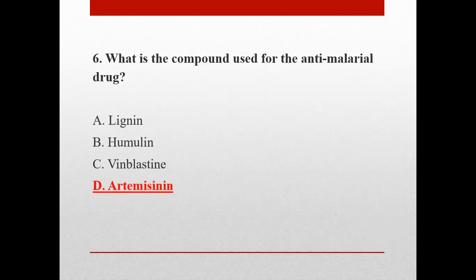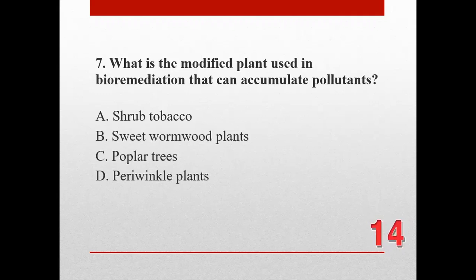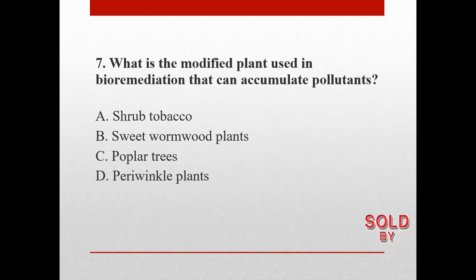Number seven. What is the modified plant used in bioremediation that can accumulate pollutants? A. Shrub tobacco, B. Sweet wormwood plants, C. Poplar trees, and D. Periwinkle plants. The correct answer is A. Shrub tobacco.